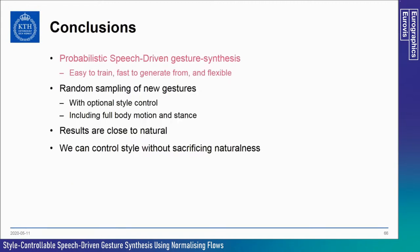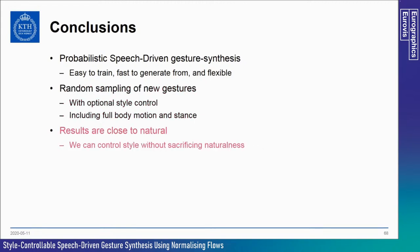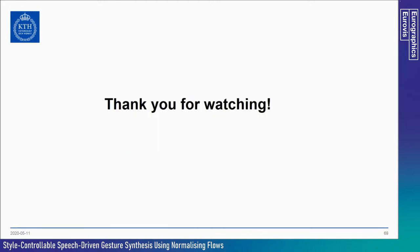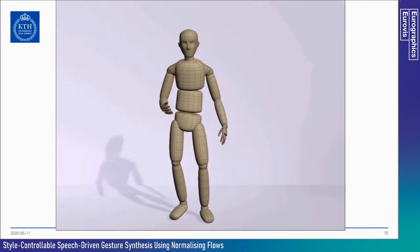In conclusion, we have presented a novel system for speech-driven gesture synthesis that is probabilistic and allows generative random sampling of novel gestures. We showed control over gesturing style including average gesture speed and spatial extent. The system generates not only hand and arm gesticulation but entire body movements including stance shifts and stepping motion. Our evaluations show convincing results and that style control does not negatively affect naturalness. Thank you for watching — please see our paper for more details.